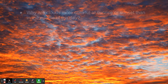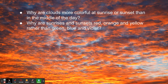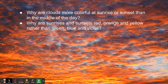You may be looking at the sunset and ask, why are the clouds so colorful? Why are they so much more colorful at sunrise or sunset than in the middle of the day? Or why are sunrises and sunsets red, orange, and yellow rather than green, blue, and violet? So a phenomenon would be the color of a sunrise or a sunset — and not just why it's some colors, but why it's never the other colors.